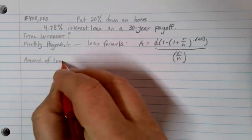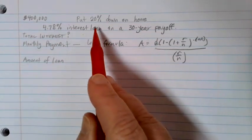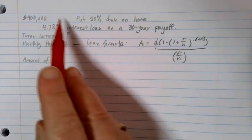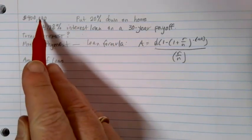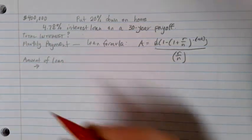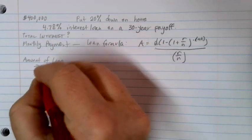Now, in this case, I'm buying a $400,000 house, but I'm putting 20% down on the home. So my loan is not going to be for the full $400,000. The first thing we're going to need to do to figure this one out then is first find what is the amount of the down payment.